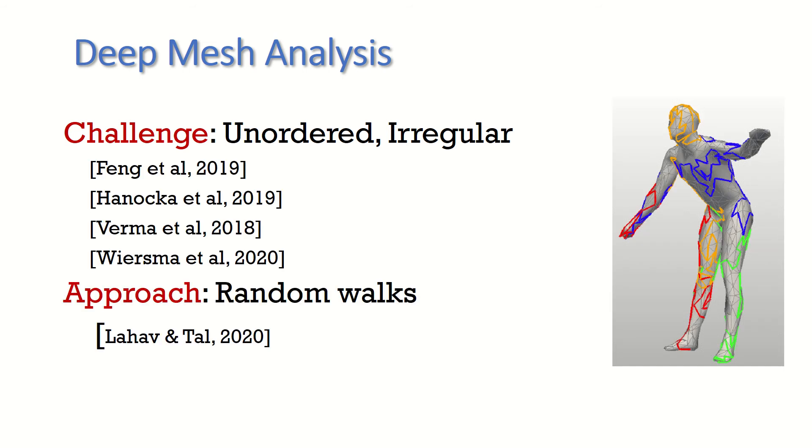Instead of reordering the unordered data to suit convolutional neural networks, as done by other works, we are inspired by a recent work termed MeshWalker, which captures the mesh geometry by simply walking along its surface in a random manner. A mesh is represented by several random walks, as can be seen here, where each walk gets a different color.